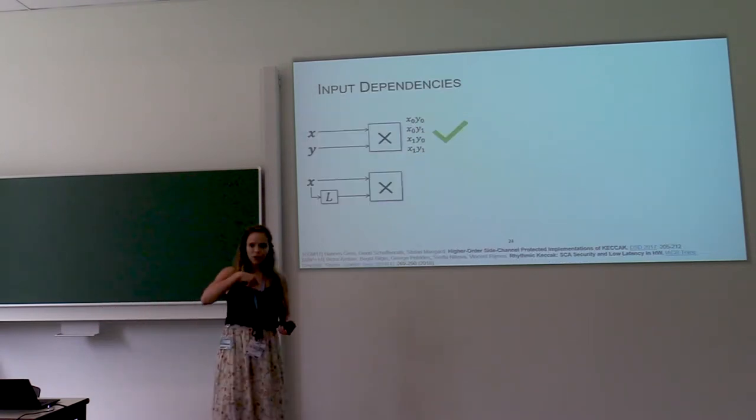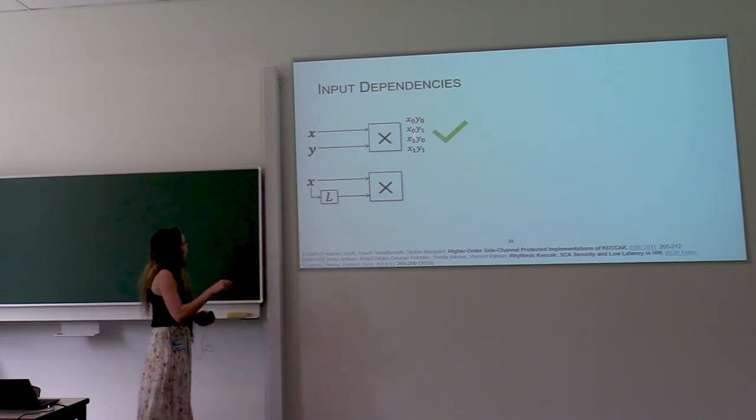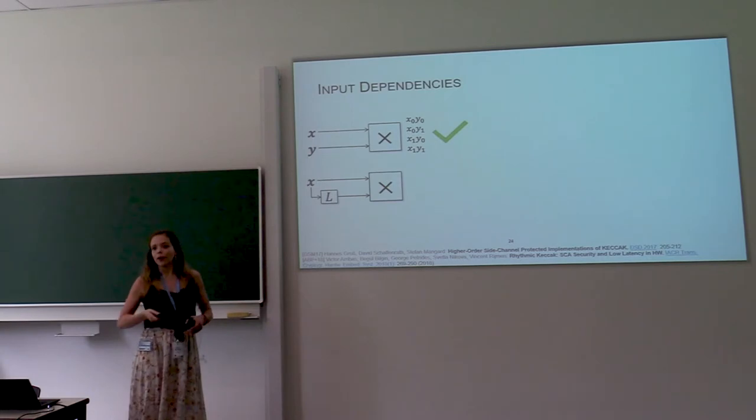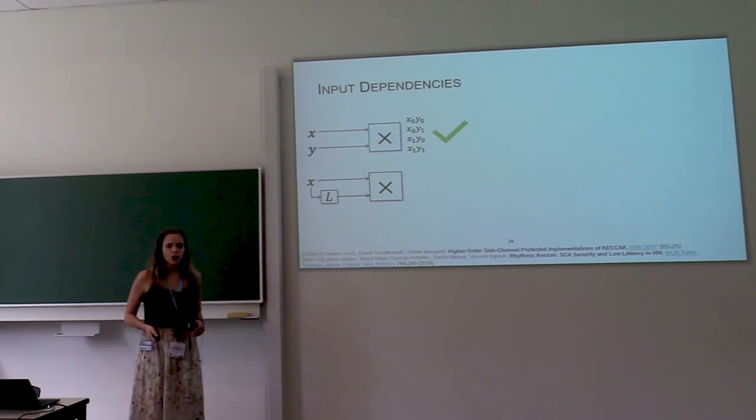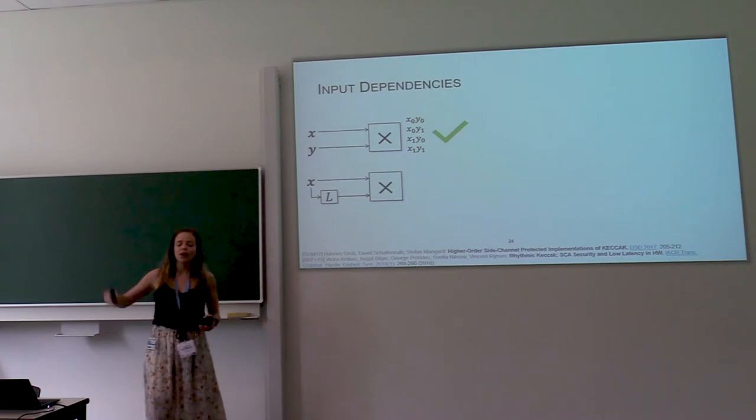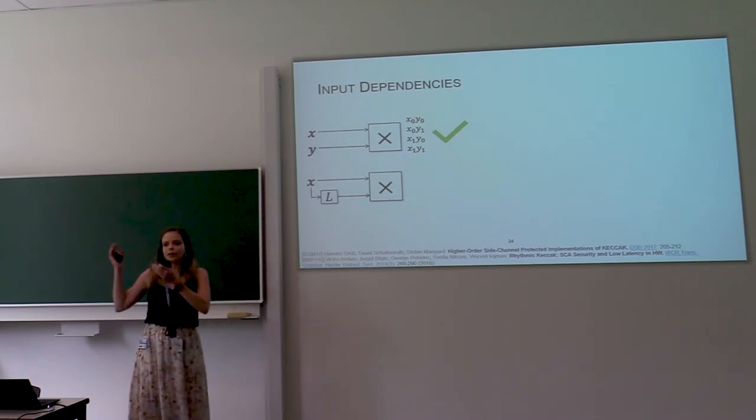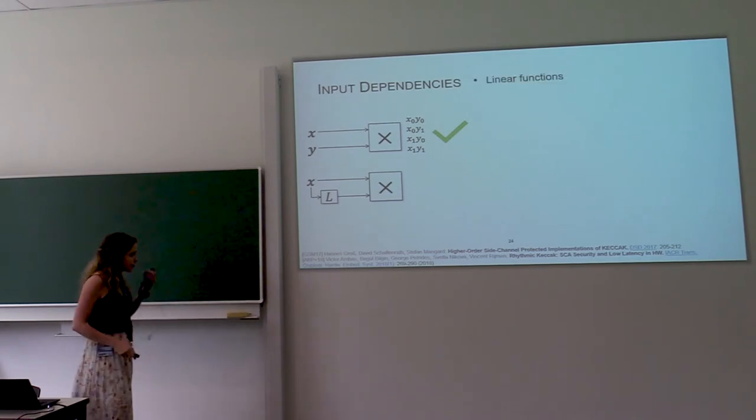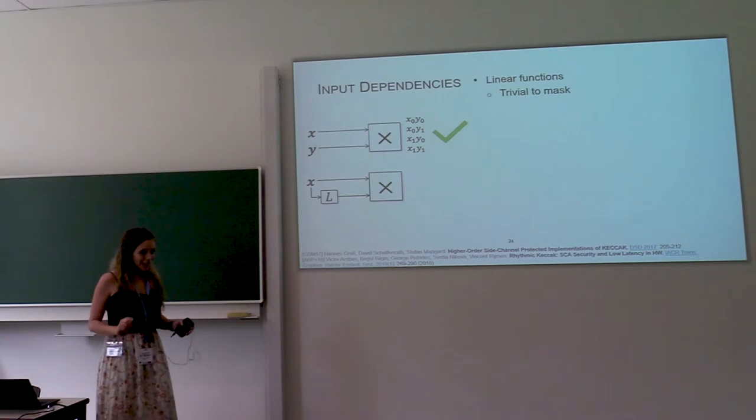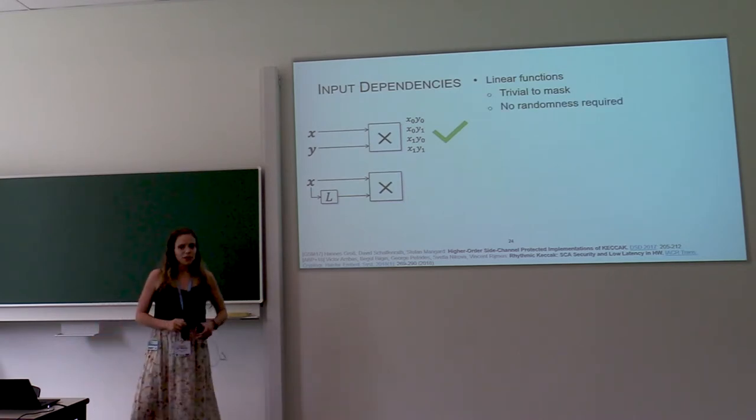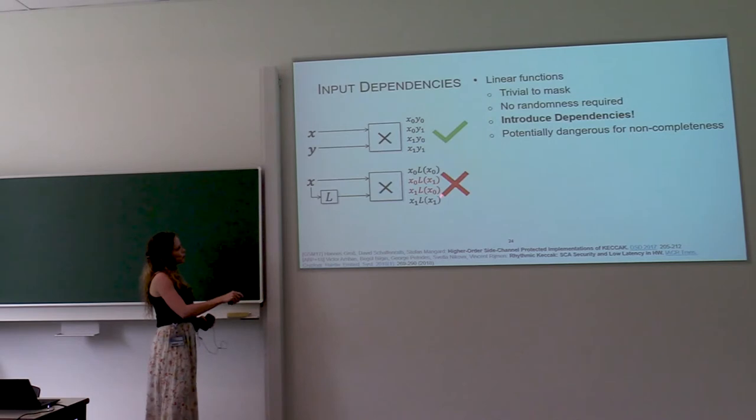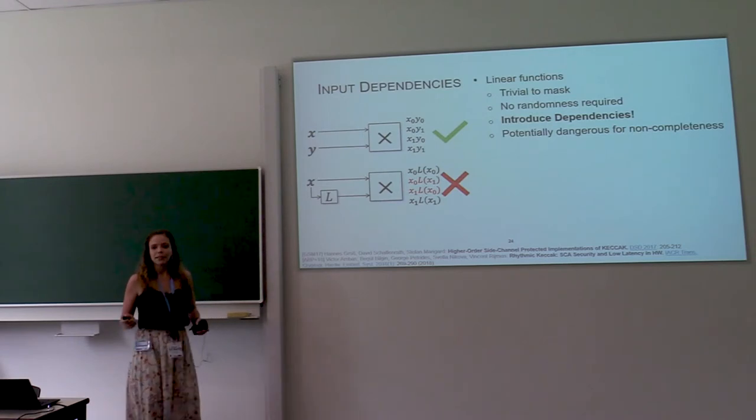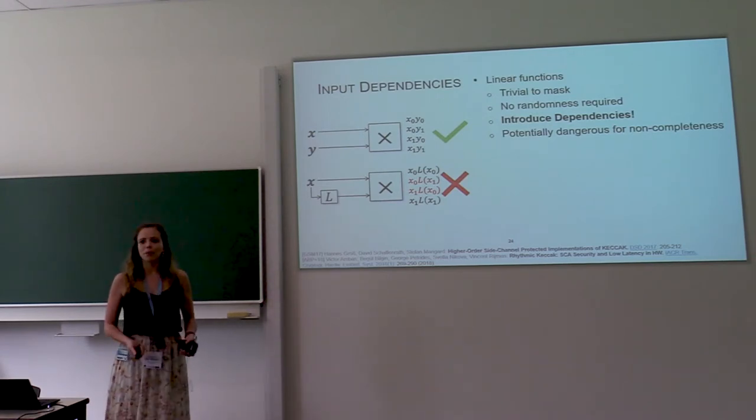Another thing is now I'm going to come back on these input independencies. So we have here a multiplier and if your input x and y are perfectly independent, then non-completeness is satisfied. We compute those four cross products and everything is fine. Suppose you want to implement a function like x to the power of 3, which you can achieve by multiplying x with x squared. And x squared is a linear function, which means it's pretty easy to mask and it doesn't require any randomness. But we have to be careful with linear functions because they introduce dependencies. And this is potentially dangerous for non-completeness.